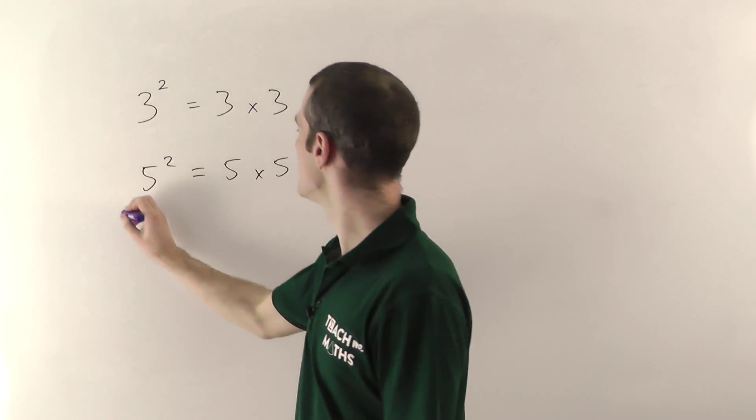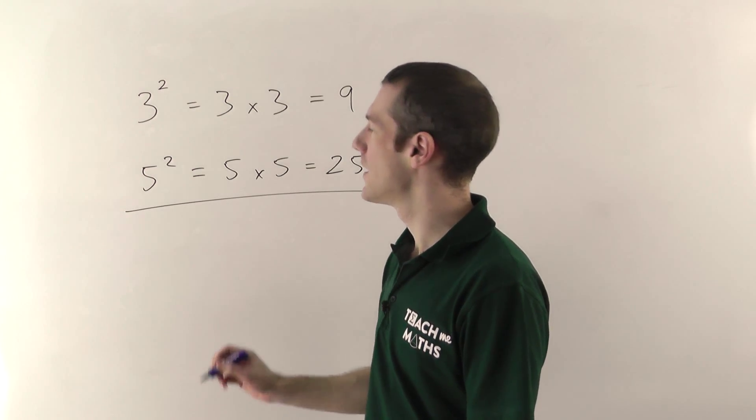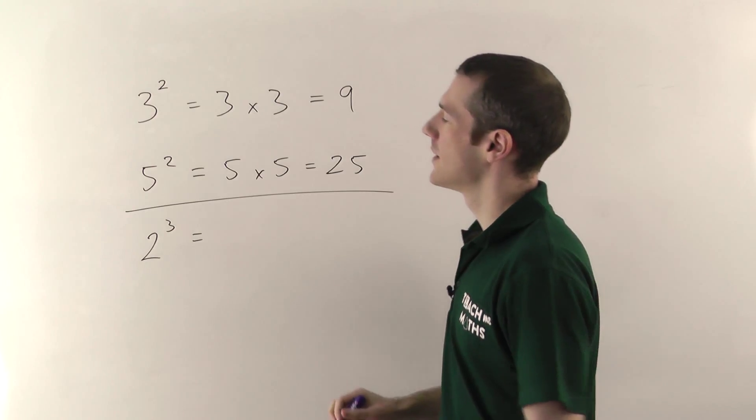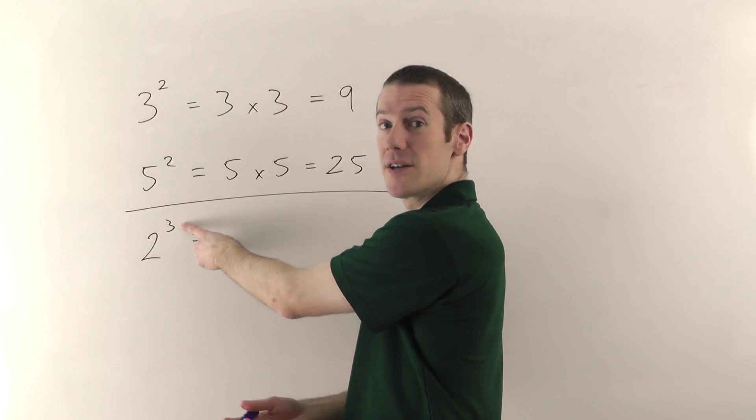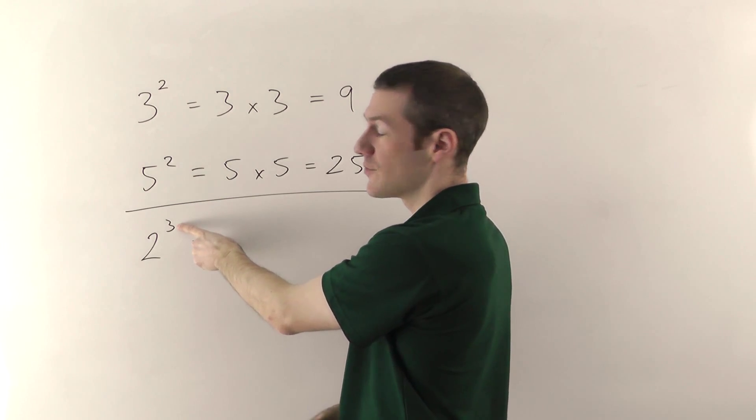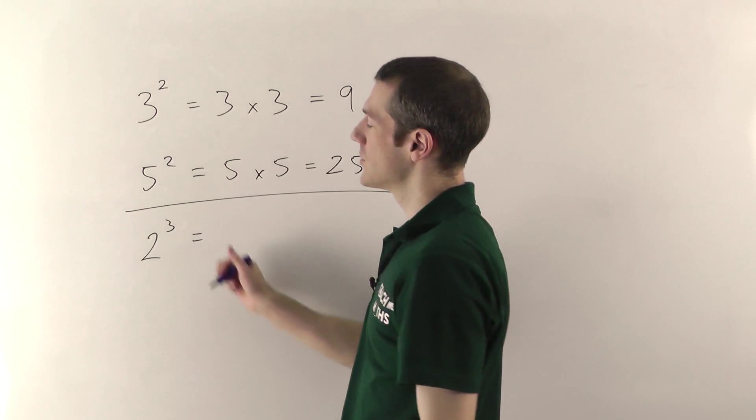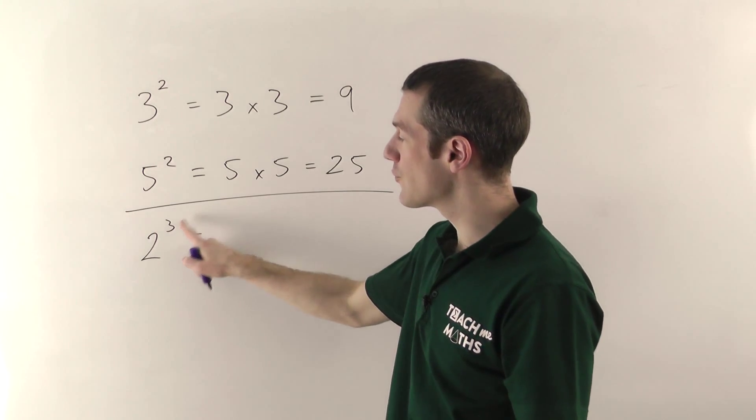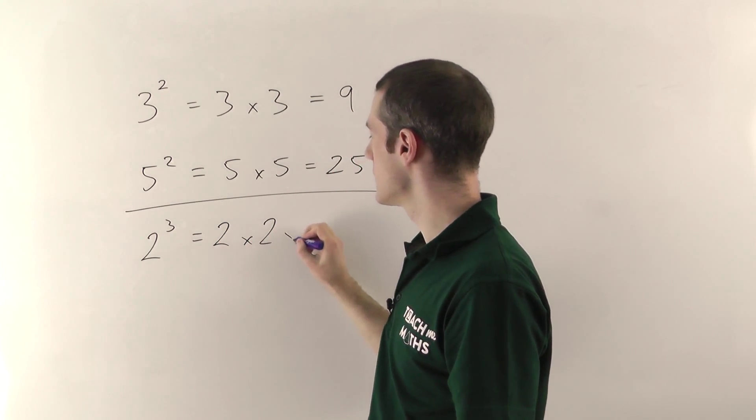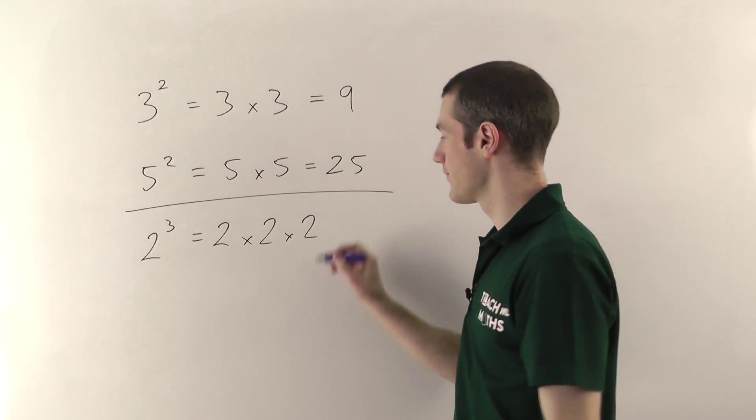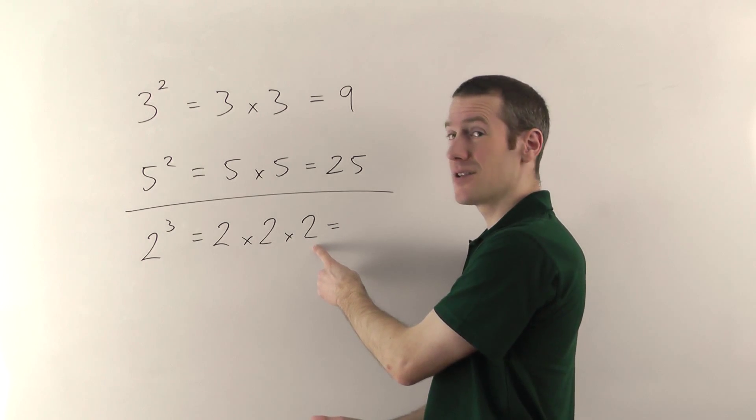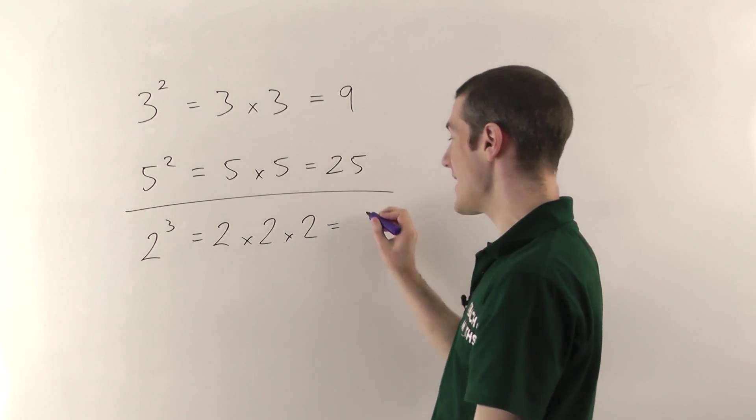So cubing, let's have 2 cubed. Now again, the power, as we call it, the number at the top right is the power, so it's a 2 if you're squaring, and you write a 3 if you're cubing. So 2 cubed means you've got 3 2's all multiplying together. It's 2 times 2 times another 2. Now 2 times 2 would be 4, times that by another 2, 4 times 2 gives you 8.